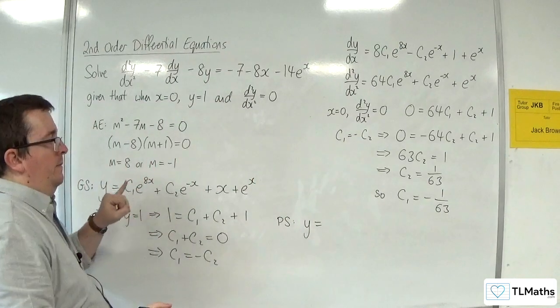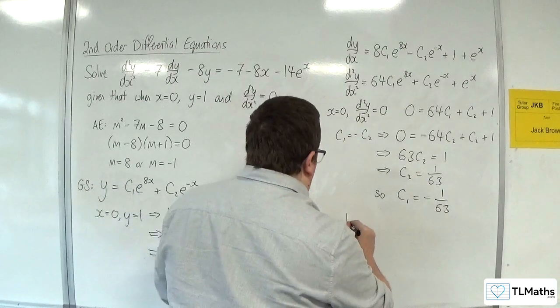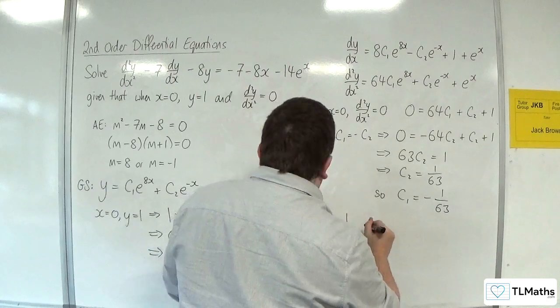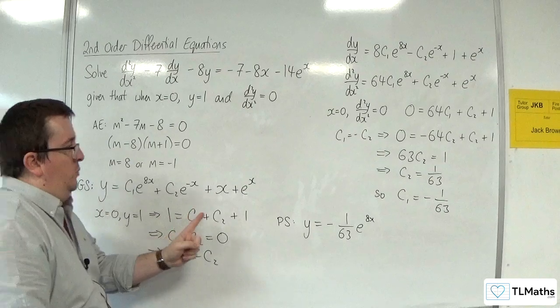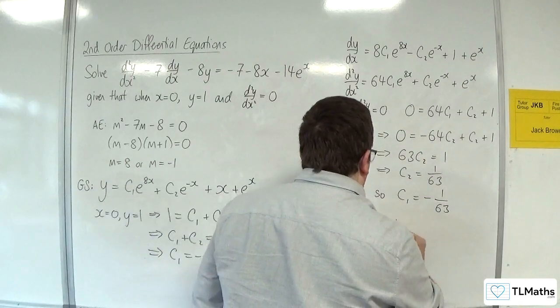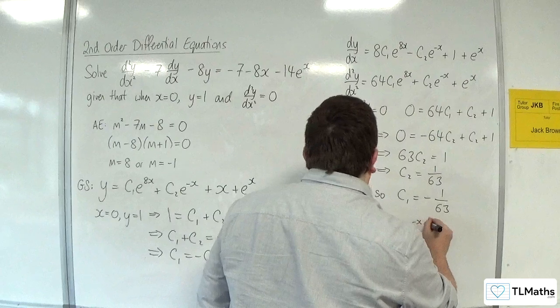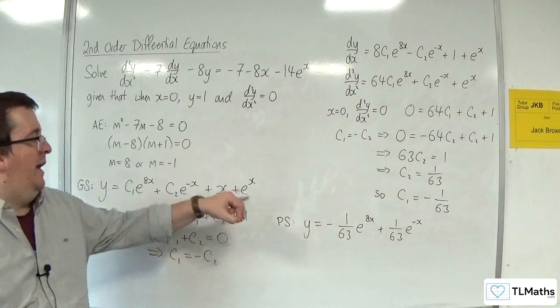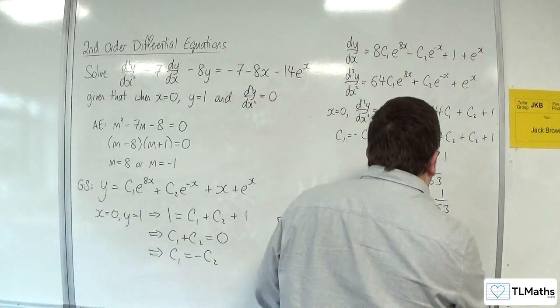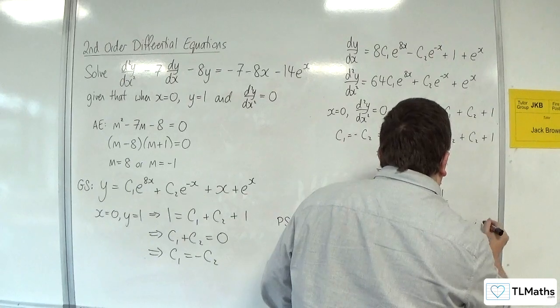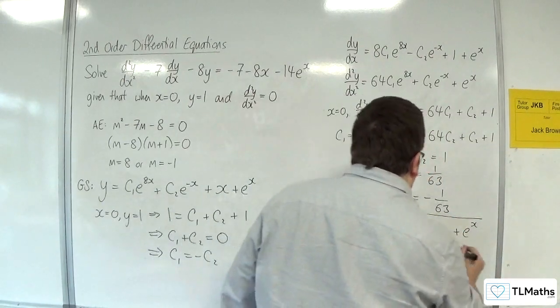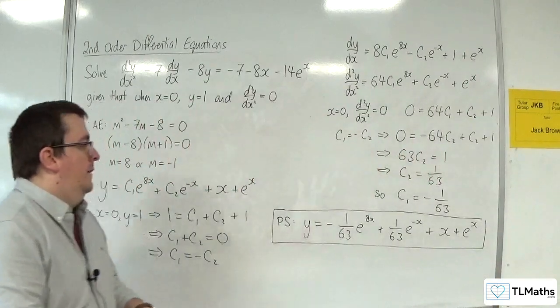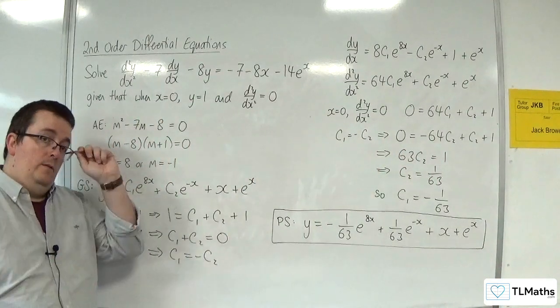So c₁, so -1/63 e^(8x), plus c₂, 1/63 e^(-x), plus x, plus e^x. And that is the particular solution I'm looking for.